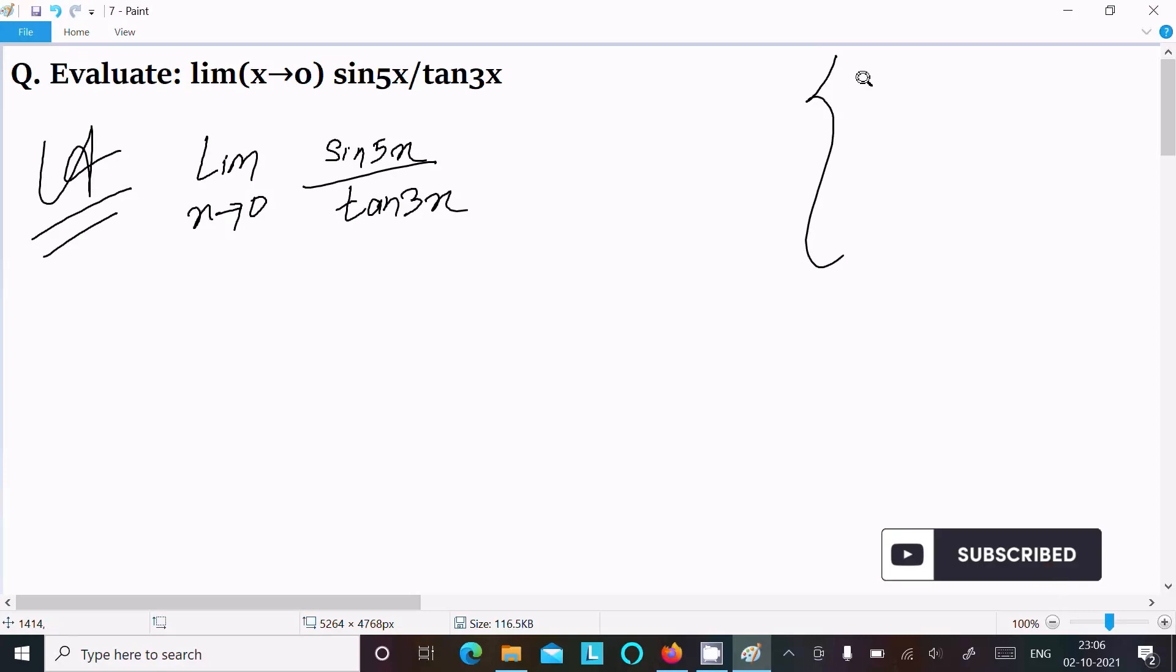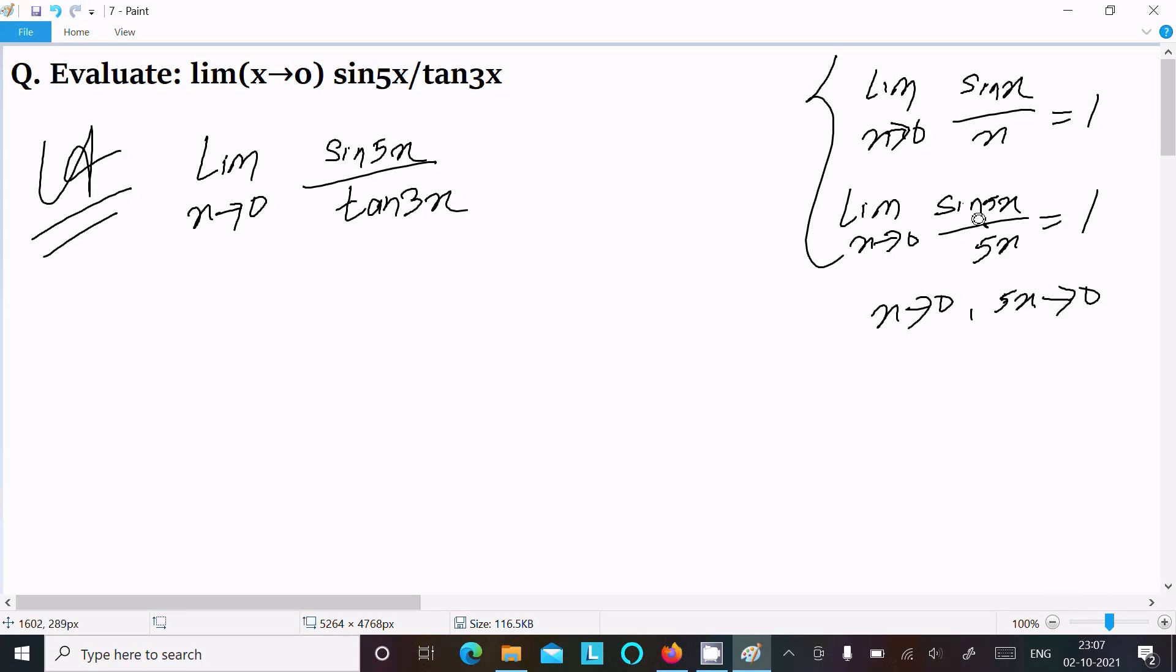We can easily achieve the output. First, we need to use the formula lim(x→0) sin(x)/x = 1, or we can write lim(x→0) sin(5x)/5x also equals 1, because as x tends to 0, 5x also tends to 0. This concept we should use.